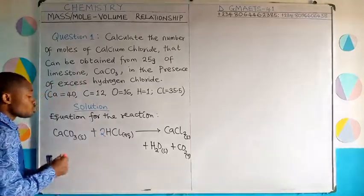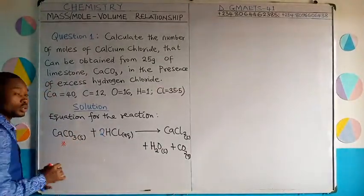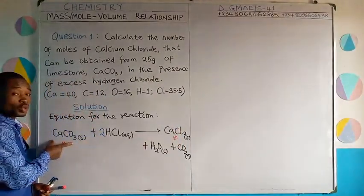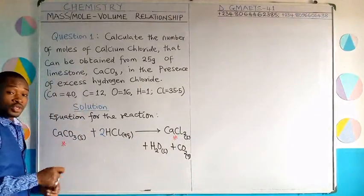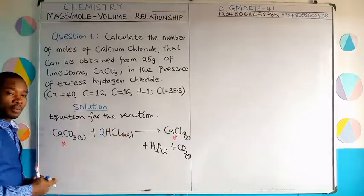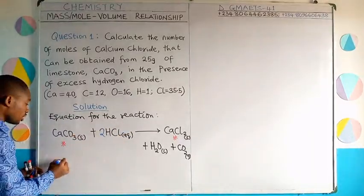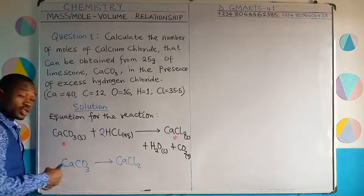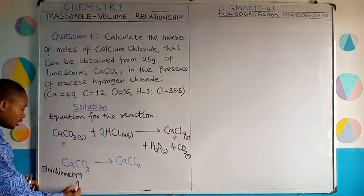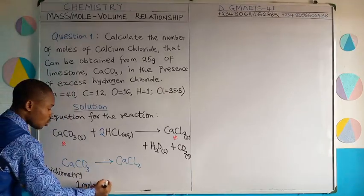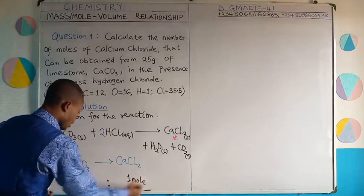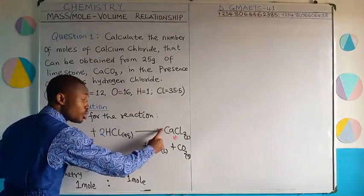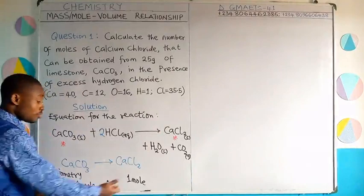Now that the equation is balanced, I will focus on the two compounds of interest: limestone (CaCO₃) and calcium chloride. We have to determine the number of moles of calcium chloride that 25 grams of limestone will produce. Looking at the stoichiometry, the mole ratio is 1 mole of CaCO₃ giving 1 mole of CaCl₂. One mole of limestone produces one mole of calcium chloride — that is the meaning of the 1:1 ratio.